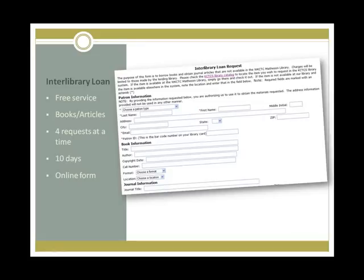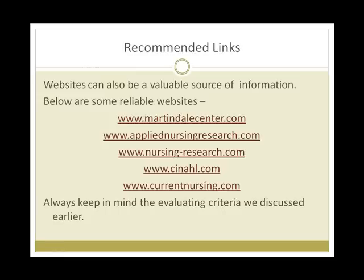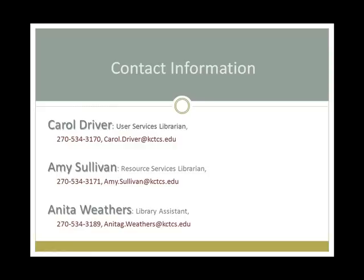You can also enter the citation information on the online Interlibrary Loan request form on the library homepage. You can request up to four items at a time, and your items should arrive in approximately 10 working days. Additionally, there are many websites that can be useful — just remember to use the five evaluating criteria when using online sources. The instruction team hopes this online orientation helps you in doing your library research. If you need additional assistance, please feel free to contact one of the instruction team.